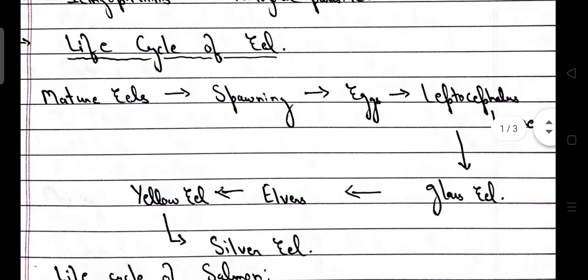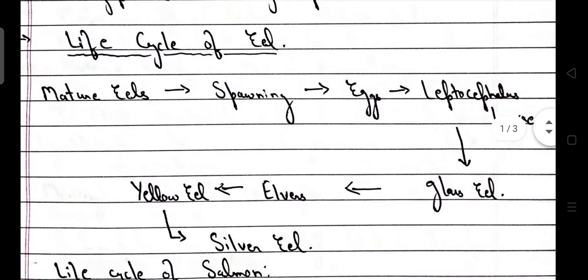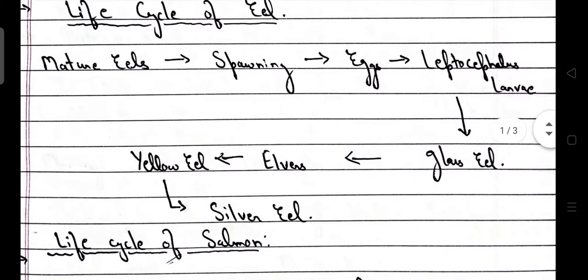Coming to the life cycle of eel: first, maturation of eel, then spawning, then laying of eggs. Eggs are converted to Leptocephalus larvae, then glass eel, then elvers, then yellow eel, and finally silver eel.